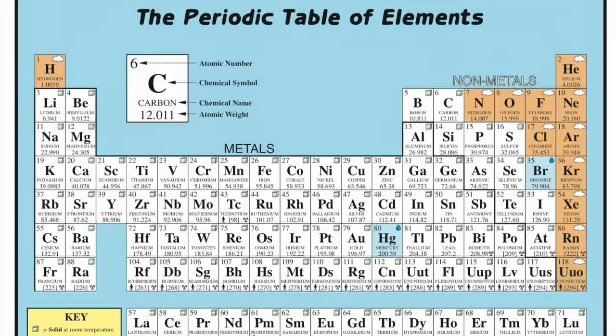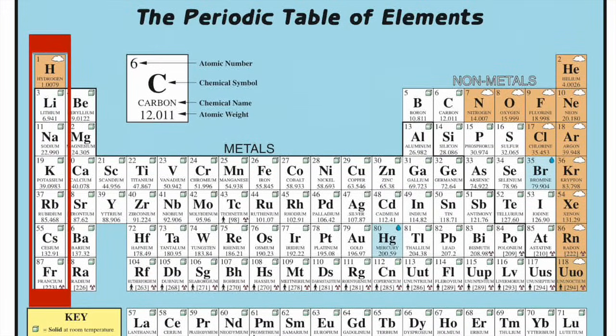Each vertical column represents a family of elements. The elements in each family have similar chemical properties because the arrangement of their outermost electrons is similar, something you'll learn about in the next few tutorials.